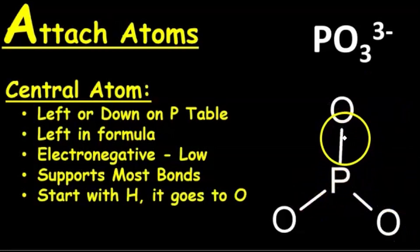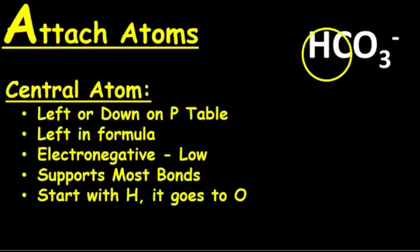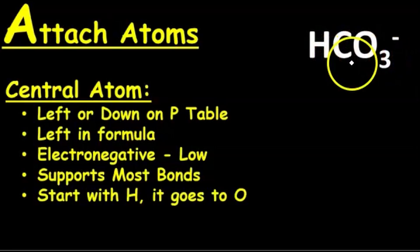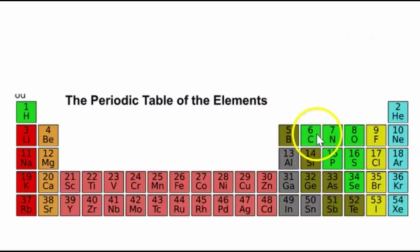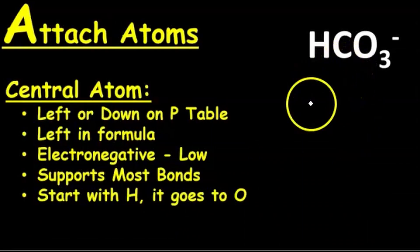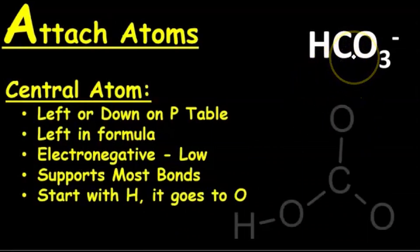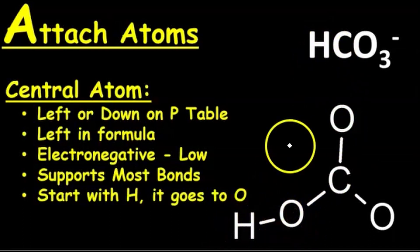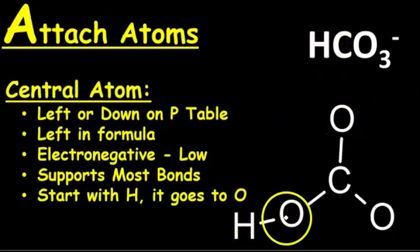Each line represents two electrons. If the formula starts with an H, then the H goes to an O. So for carbon and oxygen on the periodic table, carbon is further to the left than oxygen, so it's less electronegative and can support more bonds — carbon is the central atom. If the formula starts with an H, the H is bonded to an O. If there are two H's, we'd have one H to each O; three H's, one H to each of the three O's, things like that.